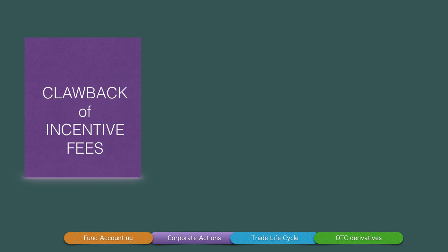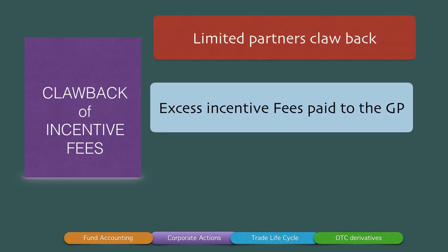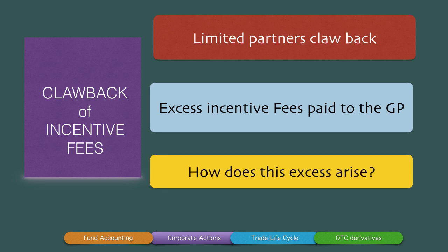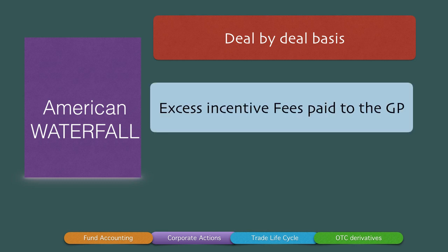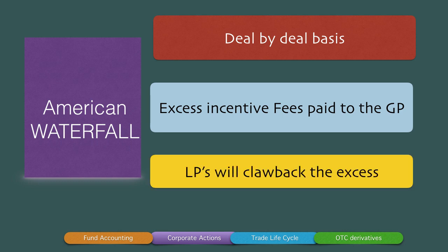There is also the concept of clawback of incentive fees, where limited partners claw back excess incentive fees paid to the general partner. This excess can arise from one great year, miscalculations, or other occasions. In an American waterfall — which is an incentive-based methodology dependent on a deal-by-deal basis for payment of incentive fees — excess incentive fees paid to the general partner are clawed back by the limited partners.